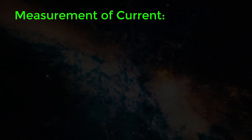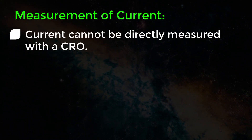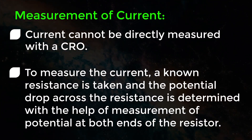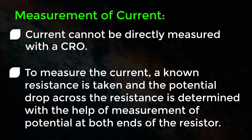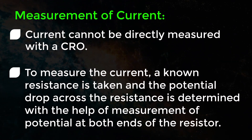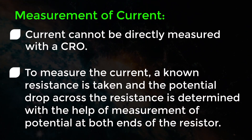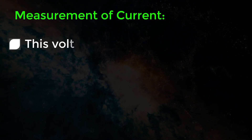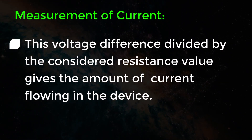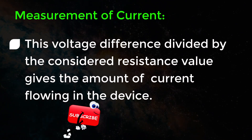Then comes the measurement of current. Current cannot be directly measured with a CRO. To measure the current, an unknown resistance is taken and the potential drop across the resistance is determined with the help of measurement of potential at both ends of the resistor. This voltage difference divided by the considered resistance value gives the amount of current flowing in the device.